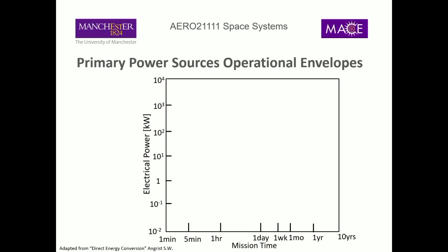Looking at mission operations, on the y-axis we have electrical power in kilowatts and on the x-axis mission time, to see what types of power technology might be relevant. Down in the corner with relatively low electrical power and short mission times, batteries tend to be a good, suitable power source — anything up to a day, even possibly a week, could be viable depending on what you're trying to do.